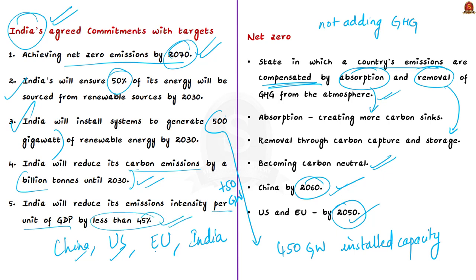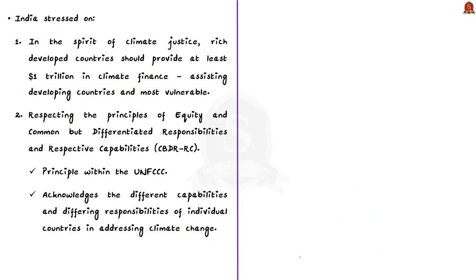India had already committed to reduce the emissions intensity of its GDP by 33 to 35 percent by 2030, measured from 2005 levels. These are the five commitments India has agreed to in COP26. Along with these commitments, the Indian side also stressed two important things with respect to climate change policies.